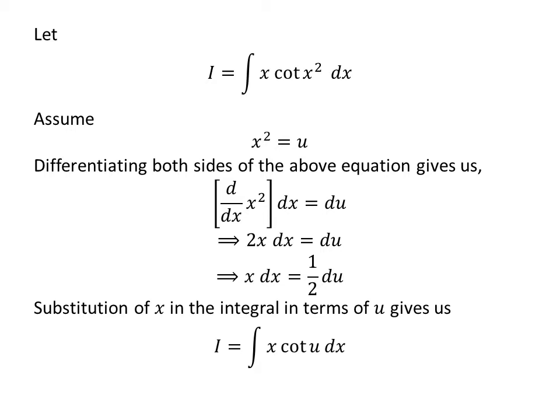Substitution of square of x by our assumed value in the integral i gives us i is equal to integral of x times cotangent of u.